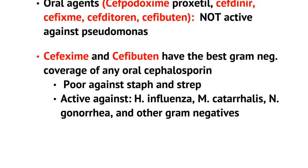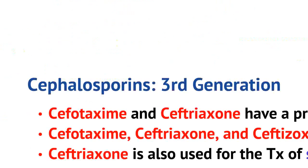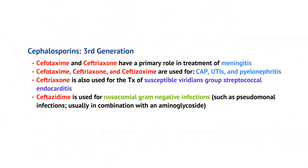For third gen cephalosporins, cefotaxime and ceftriaxone play a primary role in the treatment of meningitis. Ceftriaxone is also used for endocarditis, urinary tract infections, and pyelonephritis. Ceftriaxone can be used for the treatment of susceptible viridans group streptococcal endocarditis. Ceftazidime is also used for nosocomial gram-negative infections like Pseudomonas infections, and is commonly used in combination with an aminoglycoside.